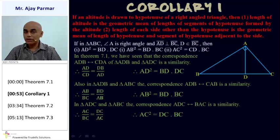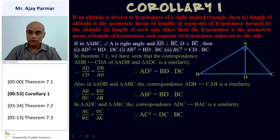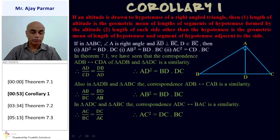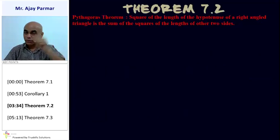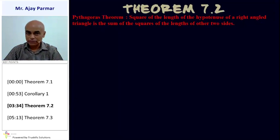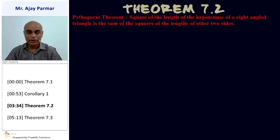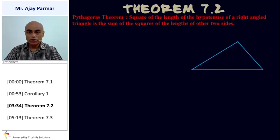We need to remember these results so that we can solve numericals based on this. Not only numericals — Theorem 7.2, which is Pythagoras theorem, is also proved using the same results. According to Pythagoras theorem, the square of the length of the hypotenuse of a right-angled triangle is equal to the sum of the squares of the lengths of the other two sides.